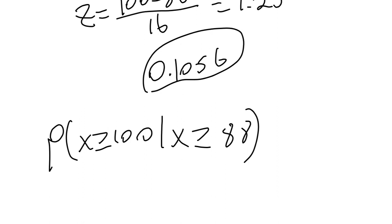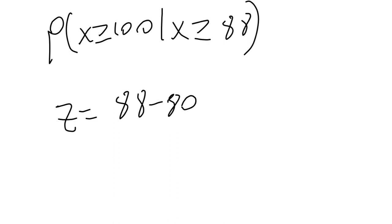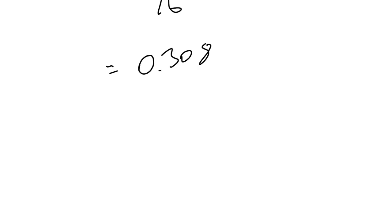Using the same method, we get that our z-score in this case is x minus mu over sigma, so here we get 88 minus 80 over 16, giving us 0.5. Using our standard normal table again, the probability of x being greater than or equal to 88 is about 0.3085.